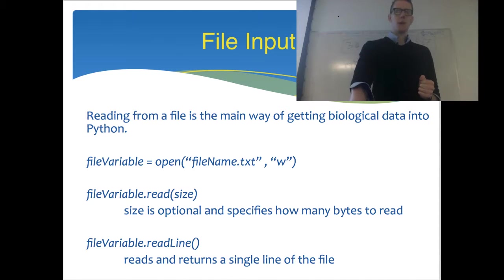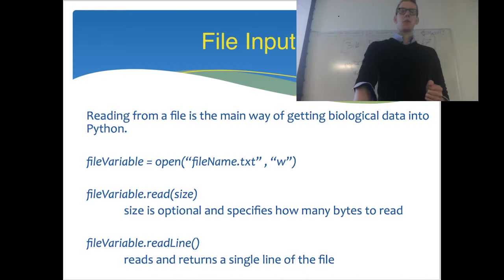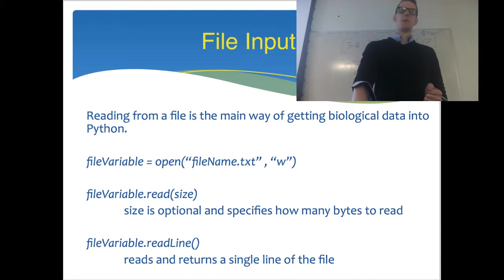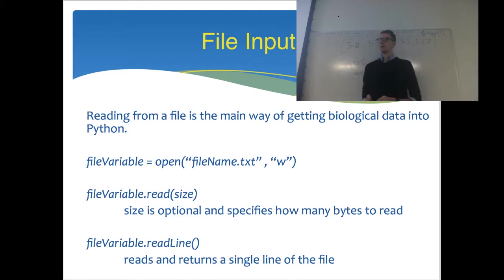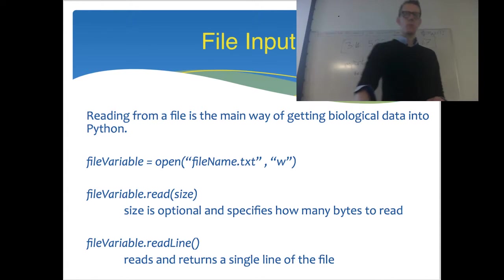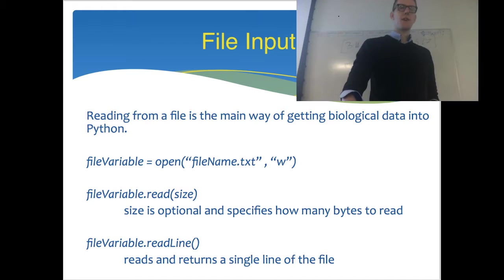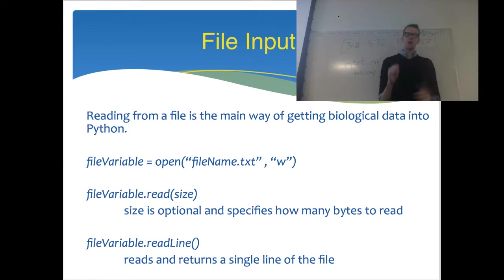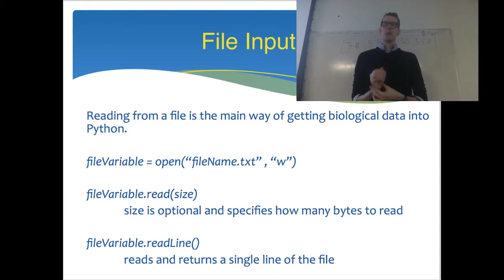Here's how we open a file in Python. You call open, then in quotes you give the file name, and after a comma you give some permissions. The W means I want write permissions for this file. That open function creates a file variable, and this is the only time that you refer to the file by its location on the disk.